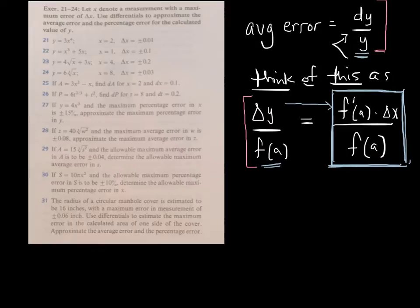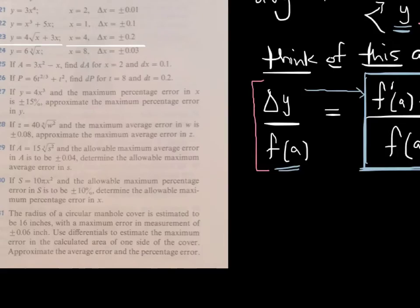So with our new working formula for average error, let's look at something like 23. And of course, the problem is, as before, we're going to use differentials to approximate the average error and the percentage error. But before we do all that, we've got to figure out our ingredients of f of a, f prime of a, and delta x.